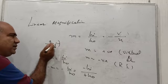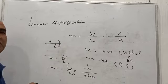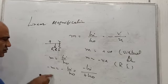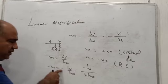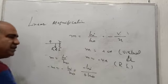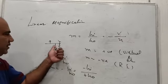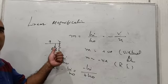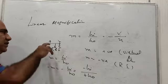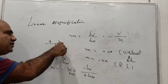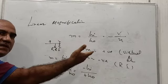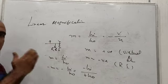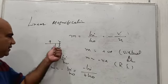For keeping this fraction negative, even when the height of the object is positive, the height of image has to be negative. And if the height of image is negative, it is below the principal axis and to the left of the mirror in case of a concave mirror — so it has to be real and inverted. We have seen this for every possible position in a concave mirror: for all six positions, only one position between pole and focus gave a virtual and erect image behind the mirror. All others found in front of the mirror were real and inverted.